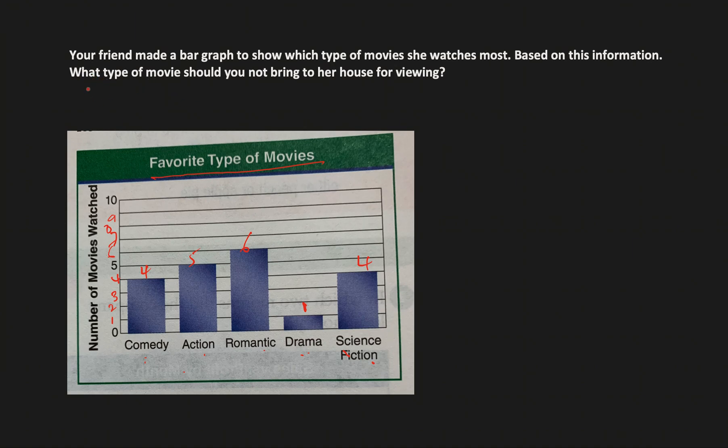The question here is, your friend made a bar graph, which is this, to show which type of movie she watches the most. Based on this information, what type of movie should you not bring to her house for viewing? Your friend made this bar graph to show what different types of movies has she seen. This says she has watched four different movies in comedy, one in drama, four in science fiction.